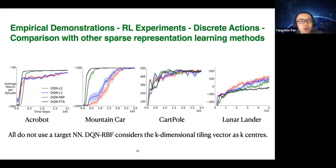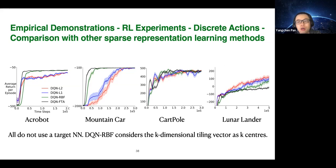As a sanity check, we compare our algorithm with other sparse representation learning techniques: L1 and L2 regularization. We also compare with DQN-RBF, which uses the K-dimensional tiding vector C as RBF centers — a natural sparse representation technique, but there is no simple way to choose the bandwidth parameter. If chosen well, DQN-RBF can work well. Overall, our algorithm outperforms all others. And again, on Lunar Lander it doesn't work as well.